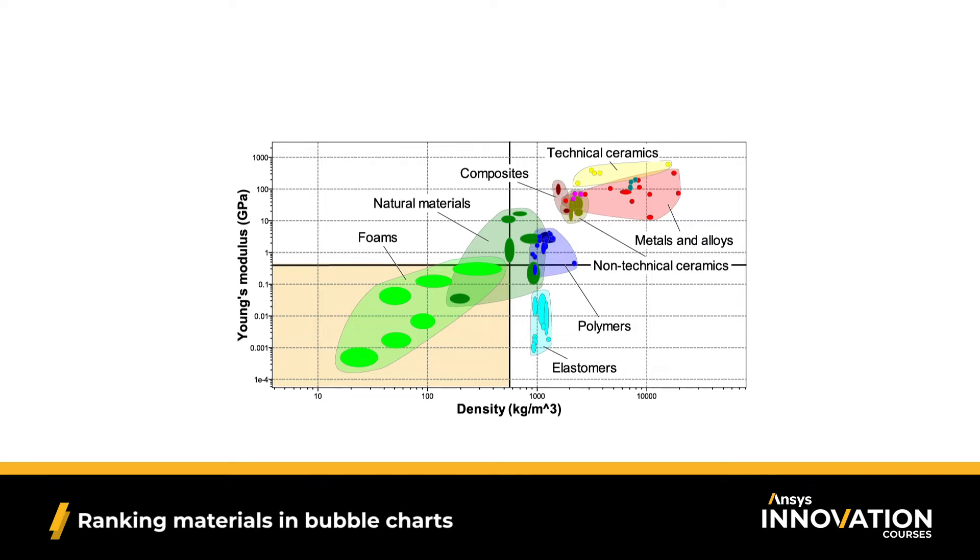Next, we have the lower right corner, where we have low stiffness, but high density. Notice how there aren't a lot of materials in this quadrant. We have some elastomers, and that's mostly it. This is okay, as generally a structural design doesn't need a heavy, yet not very stiff material.